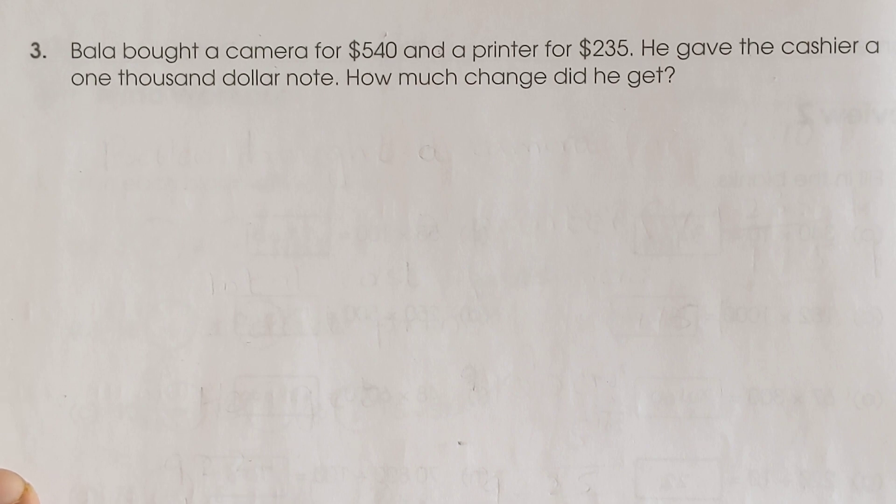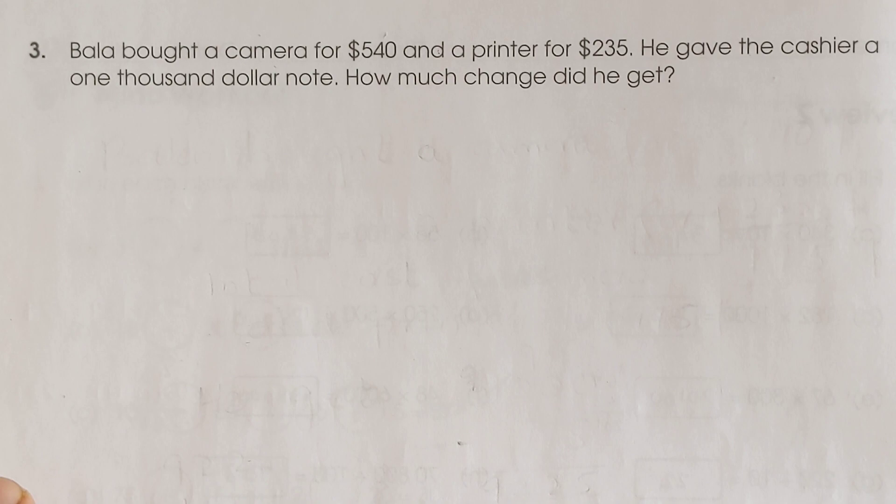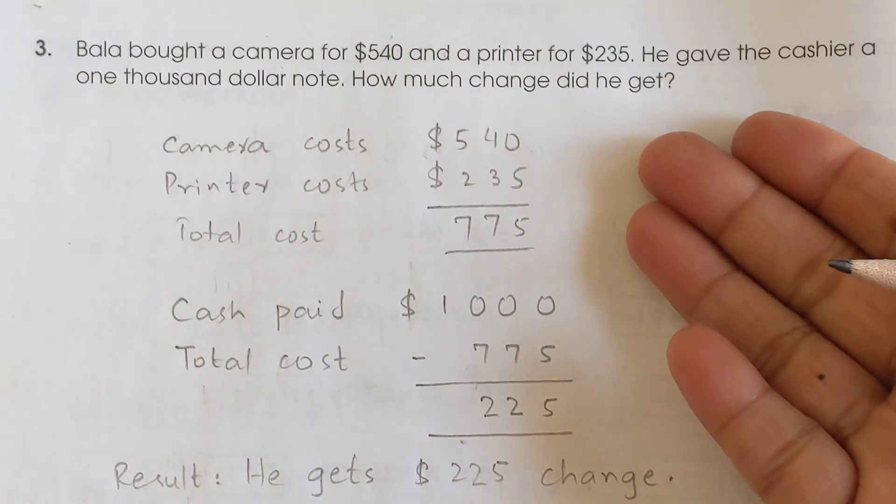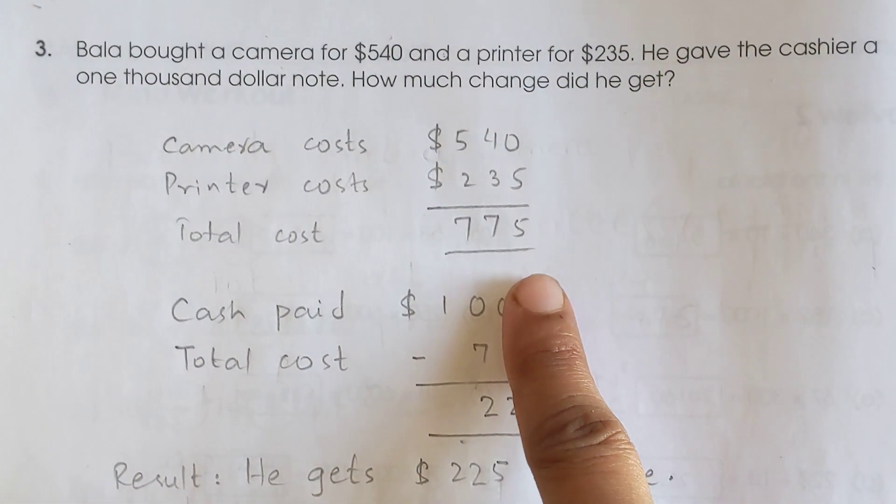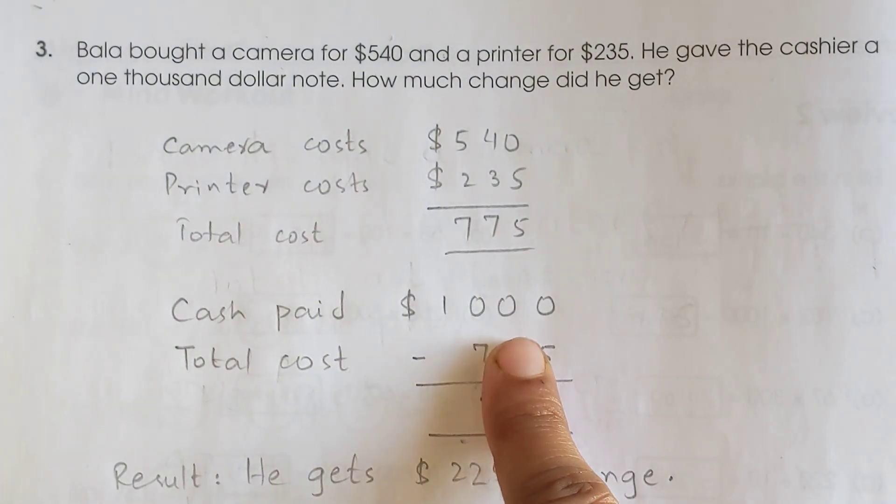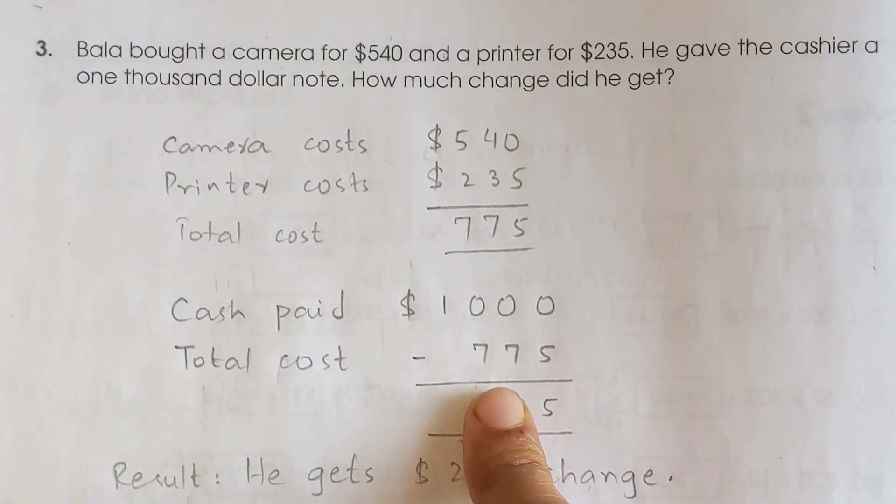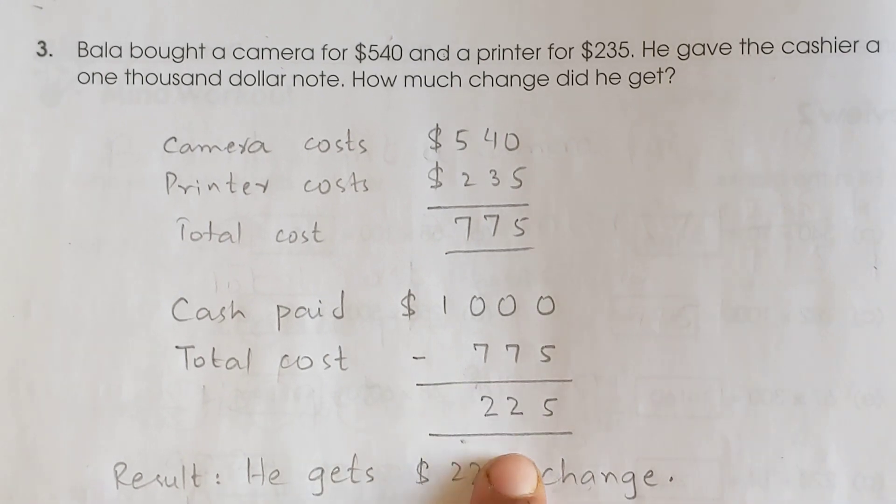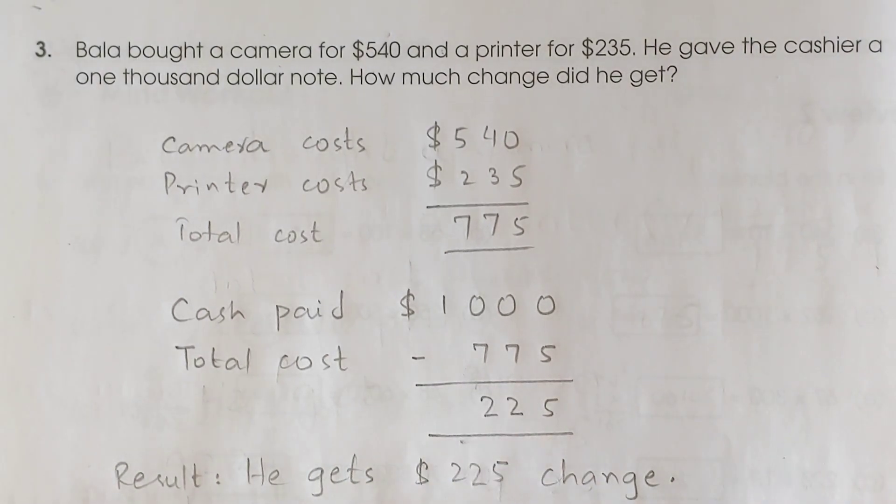So he has a thousand dollars but hasn't bought a thousand dollars worth of things. The question is, how much change did he get? To find this, we first need to find the total price of what he bought. This is a very simple question. Add the prices together to get the total. I'll show all the workings here. Camera costs $540, printer costs $235, total cost is $775.